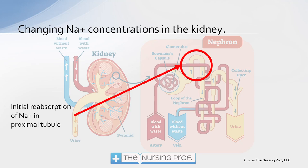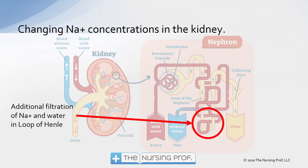The next step is the proximal tubule, where some initial reabsorption of sodium occurs. Then in the loop of Henle, there is additional filtration of sodium and water. You can see how vascular those areas are — those vessels are reabsorbing sodium and in some cases water to maintain our fluid balance in the body.